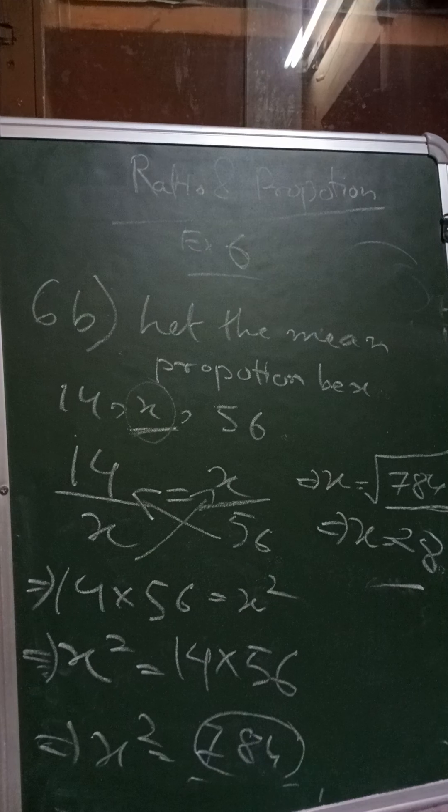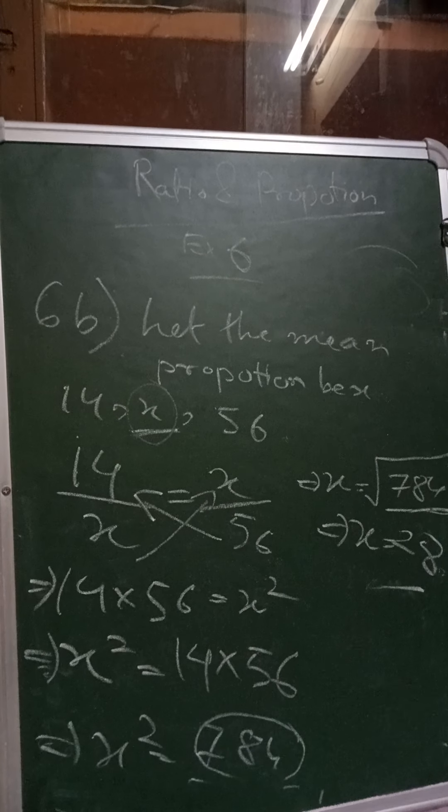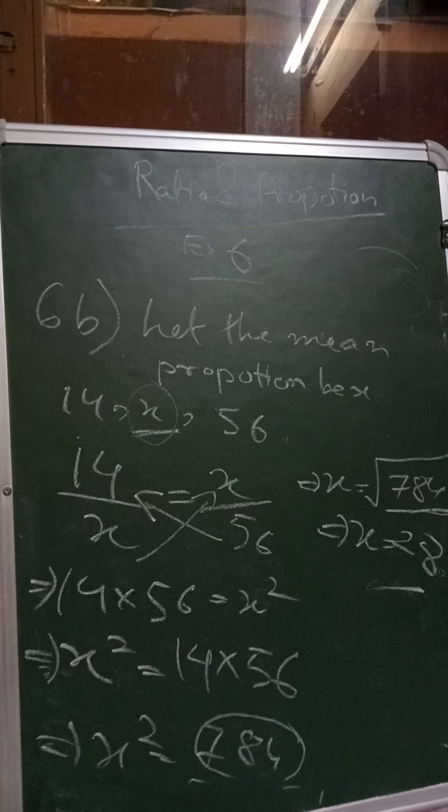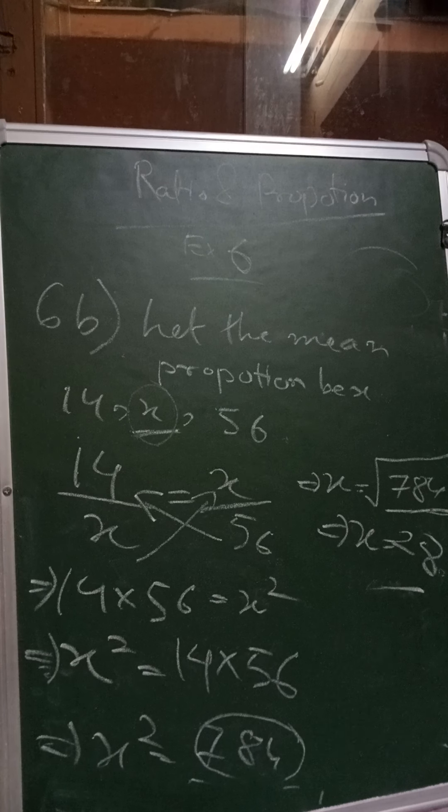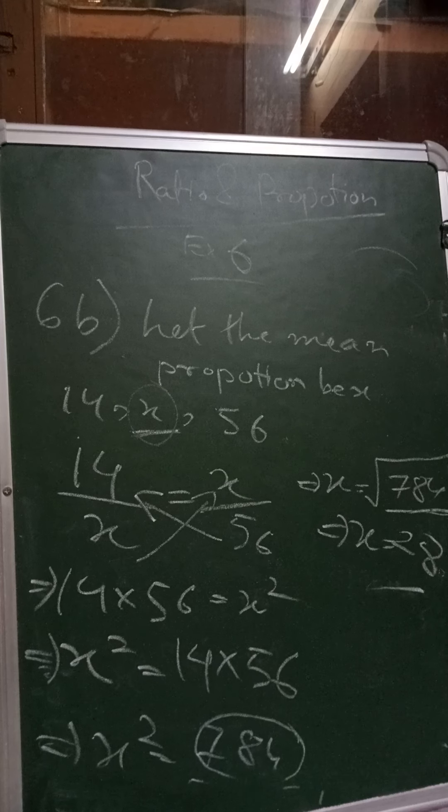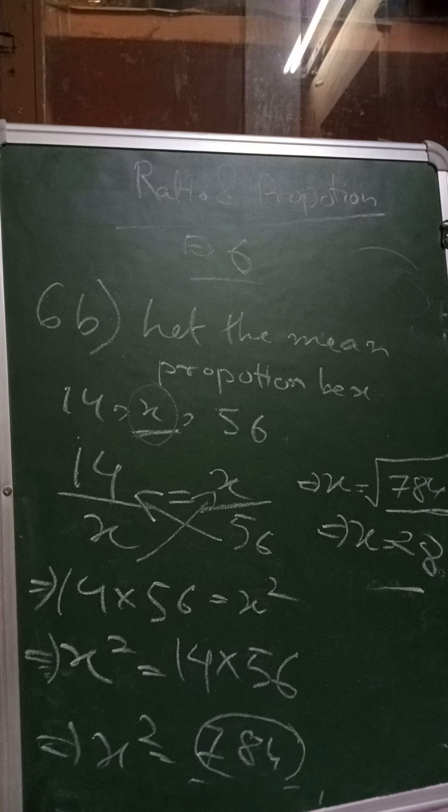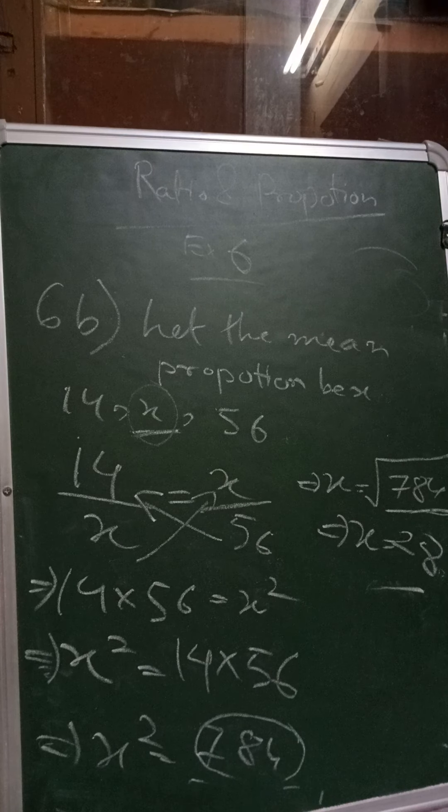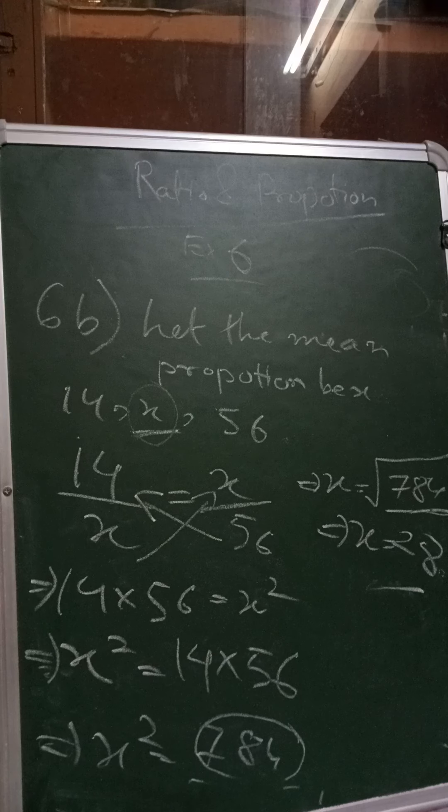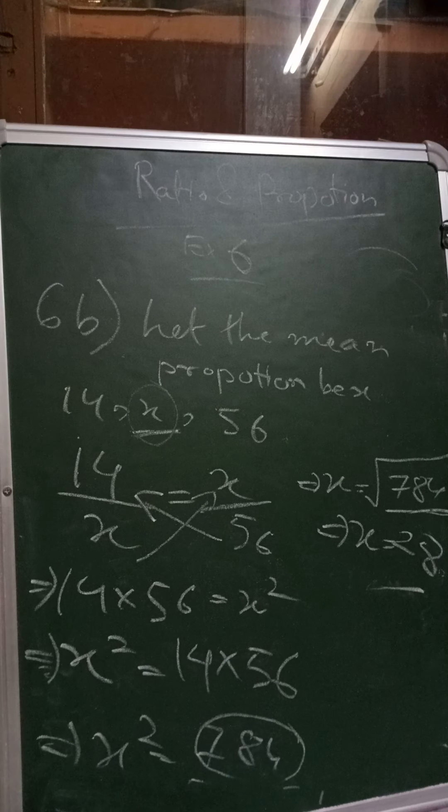So the mean proportion is 28. So these are the three processes of how to find out the fourth proportion and then the third proportion and the mean proportion. So I have done all of the three types. I hope all of the sums are clear. So this much for this video. Thank you.